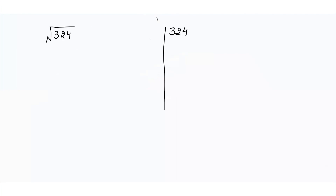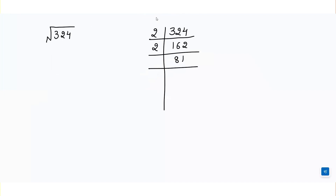Similarly, if I find out the square root of 324, we have to find the prime factors of 324. We divide 324 by 2 to get 162, then again divide by 2 to get 81. Since 81 is not divisible by 2, we divide it by 3 to get 27.